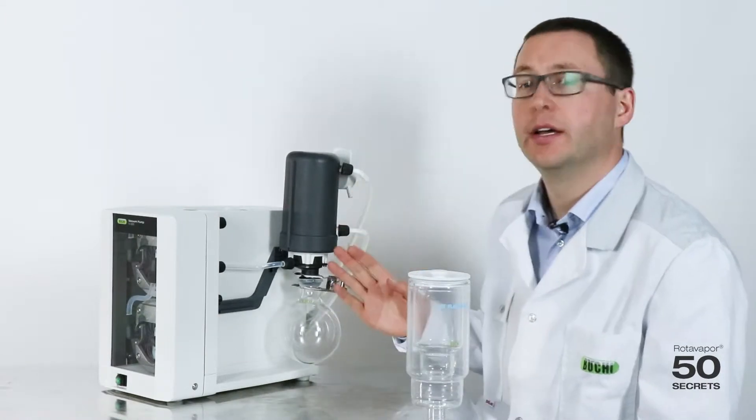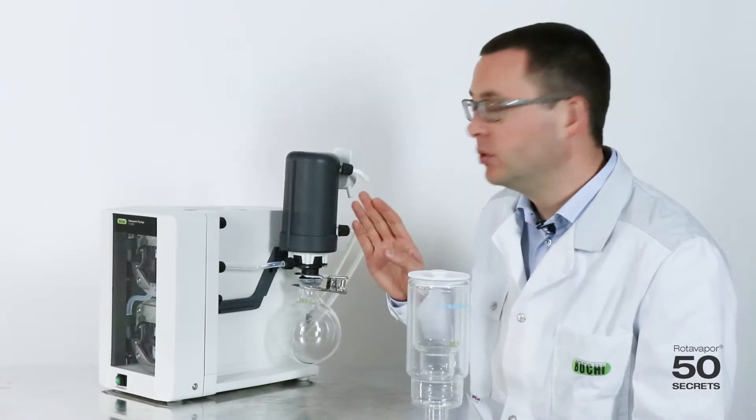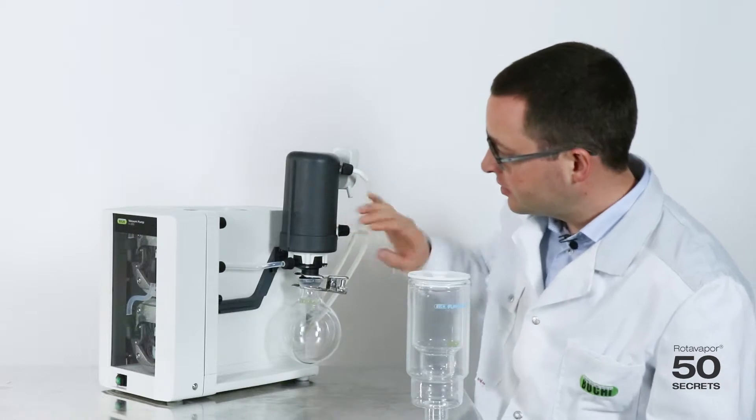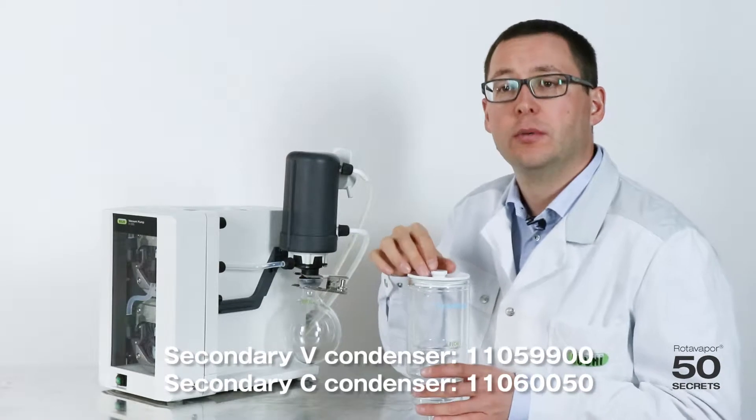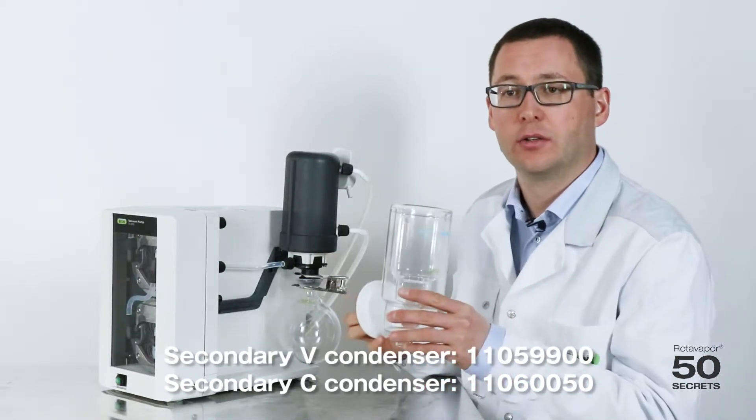Today's secret is about the secondary condenser. We have two different ones. One is the V condenser, which is this one, which has coils inside, and this one, which we call the C secondary condenser.